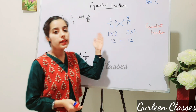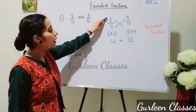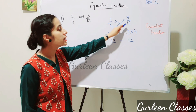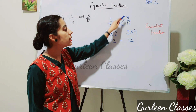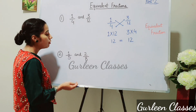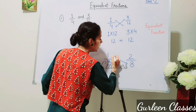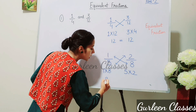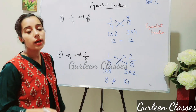Now let us find out whether two fractions are equivalent or not. First part: 1/4 and 3/12. We use the cross multiplication method — multiply the first numerator with the second denominator and vice versa. 1 × 12 = 12, and 4 × 3 = 12. Both are equal, so they are equivalent fractions. Now the second part: 1/5 and 2/8. Cross multiply: 1 × 8 = 8 and 5 × 2 = 10. They are not equal, so they are not equivalent fractions.